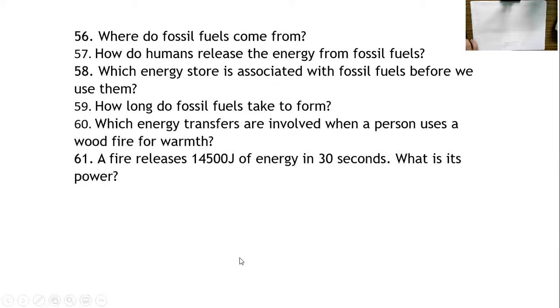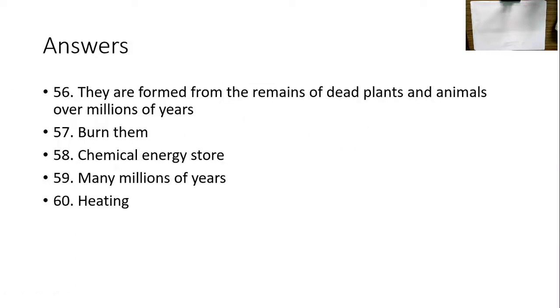You should only be watching this video if you've had a go at doing all those questions. I'm now going to put the answers up. So here are the answers for 56 to 60. How are fossil fuels formed or where do the fossil fuels come from? They are formed from the remains of dead plants and animals. How do humans release the energy from fossil fuels? We burn them. Which energy store is associated with fossil fuels before we use them? It's the chemical energy store. How long do fossil fuels take to form? Many millions of years. Which energy transfers are involved when a person uses a wood fire for warmth? The answer is heating. Now if there's anything you don't understand, I advise you to go back and watch the explanation again and then come back and do the questions again.